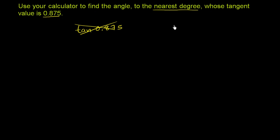They're saying that there's some angle, maybe we could call it theta, that if we were to take the tangent of that angle, we are going to get 0.875. So how do we figure out this mystery angle using our calculator?